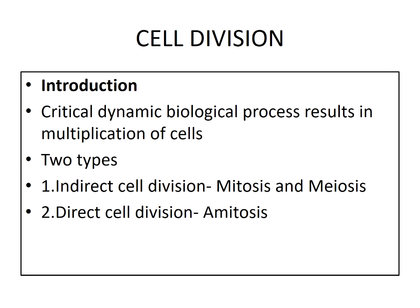First, let us know about what is cell division. Cell division is a critical, dynamic, and biological process which results in multiplication of our cells. In unicellular organisms, cell division results in reproduction or multiplication of cells, and in multicellular organisms, cell division results in increasing the number of cells that form an organ or entire body.